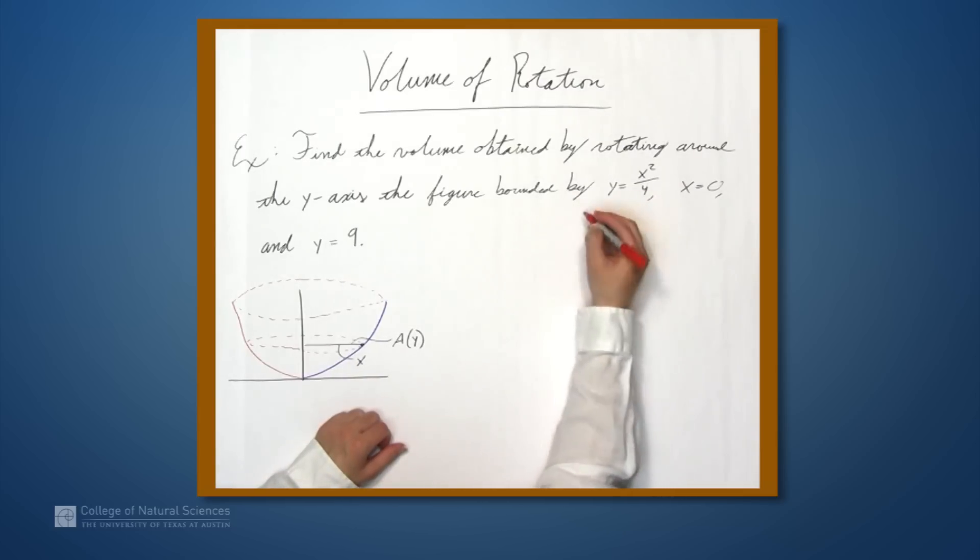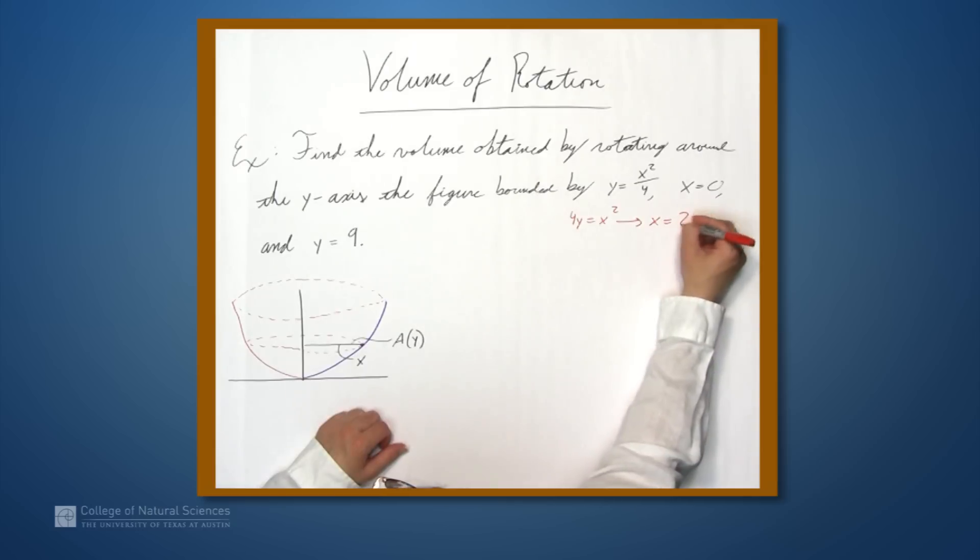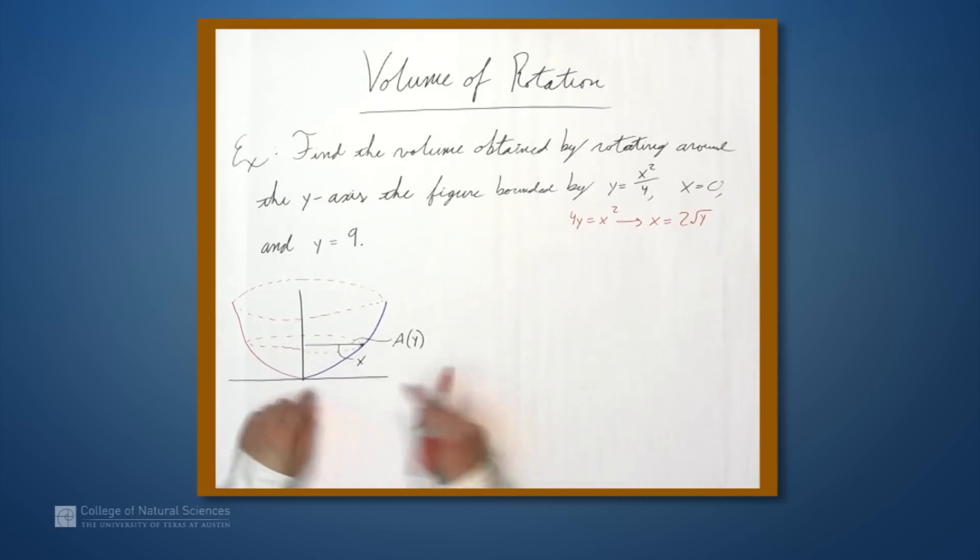So this thing, if we solve, we get 4y equals x squared. So x equals 2 times the square root of y. And because of the region we're working in, we don't need to worry about plus or minus.